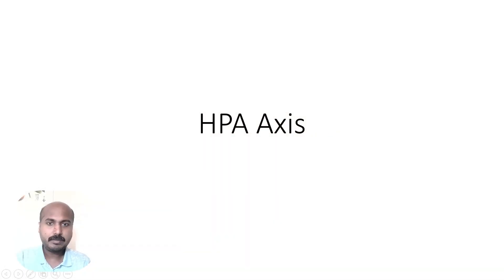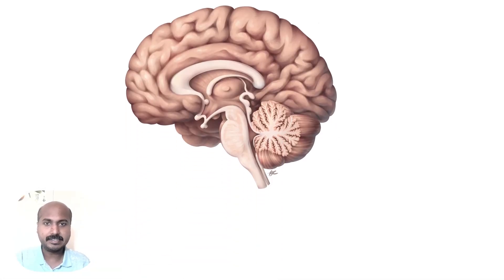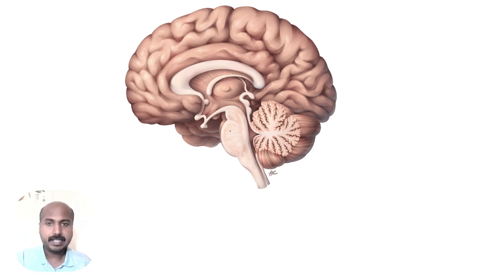Hello everyone, today we are going to learn about the HPA axis, also known as the hypothalamo-pituitary-adrenal axis. The hypothalamo-pituitary-adrenal axis is a neuroendocrine loop that begins from the hypothalamus.